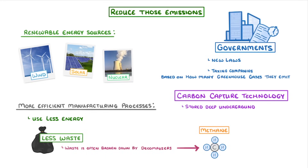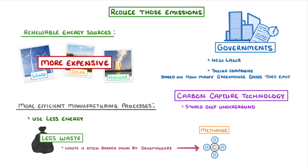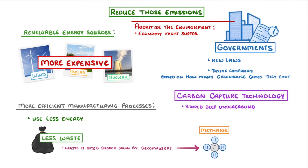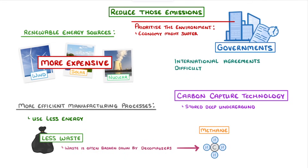Unfortunately, despite all of these good ideas, actually reducing emissions is easier said than done. For example, renewable energy is often more expensive than fossil fuels, and currently our entire economy is based on fossil fuels, which makes it really hard to change. Meanwhile, governments worry that if they prioritise the environment, the whole economy might suffer. This makes international agreements really difficult, because no country wants to agree to anything that might hurt its economy, unless it's completely sure that all the other countries will do the same.